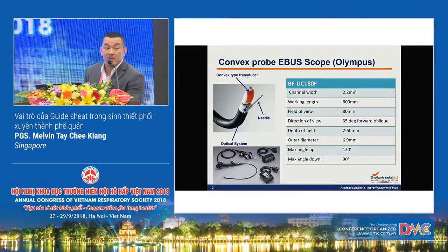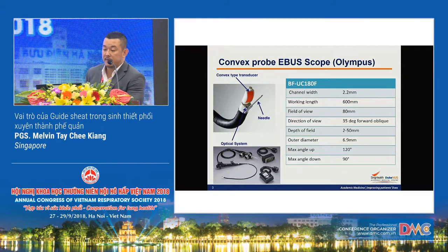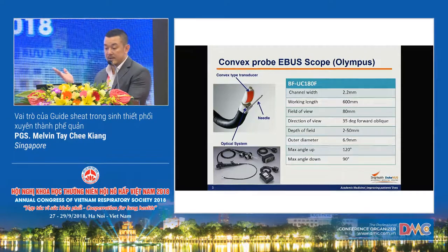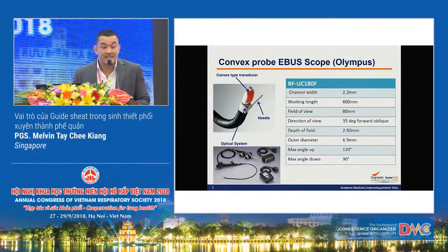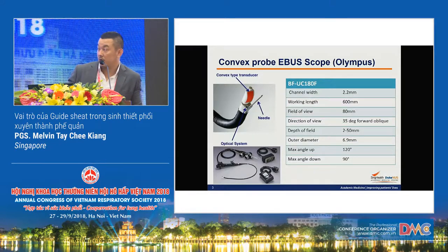The convex probe EBUS scope from Olympus features a convex-type transducer which transduces the ultrasound image, an optical system, and a needle. The channel width is about 2.2 mm and the outer diameter is about 6.9 mm. It is important to remember that the direction of field is about 35 degrees forward oblique, which is why when using the EBUS scope you should not see the entire lumen normally encountered during flexible bronchoscopy.